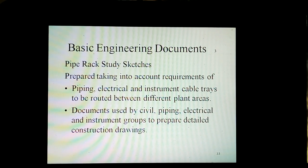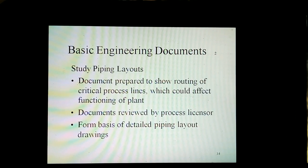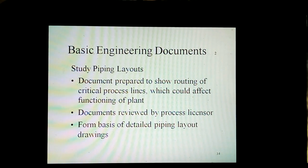Basic engineering documents include pipe rack study sketches, prepared taking into account requirements of piping, electrical and instrument cable trays to be routed between different plant areas. These are documents used by civil, piping, electrical, and instrument groups to prepare detailed construction drawings, to show routing of critical process lines which could affect the functioning of the plant, and are reviewed by process licensors. They form the basis of detailed piping layout drawings.